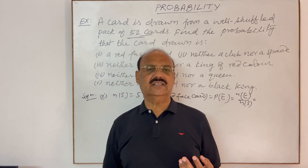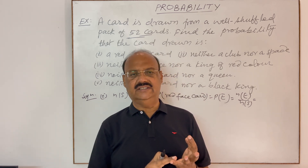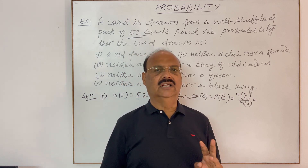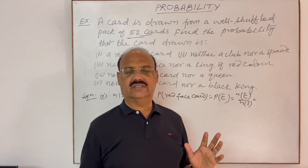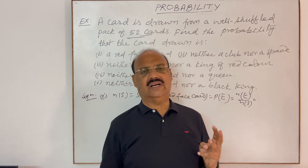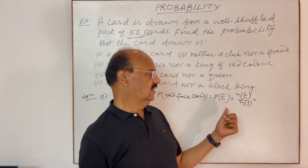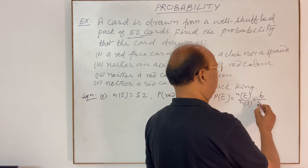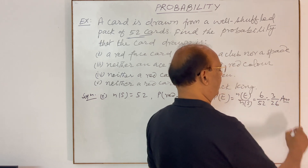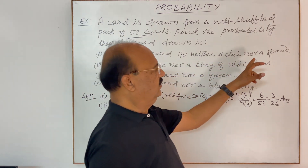Let us see how many red face cards there are. Every suit has three face cards: one king, one queen, and one jack. There are four suits. There are two types of red suits: diamond and hearts. Three face cards from diamond and three face cards from hearts gives three plus three equals six red face cards. So the probability is 6 divided by 52, which equals 3 by 26. This is the answer.